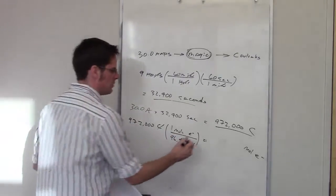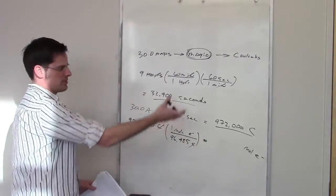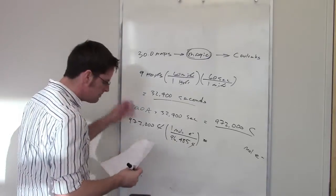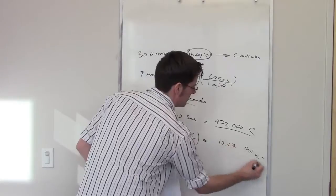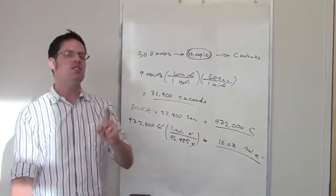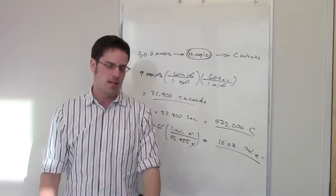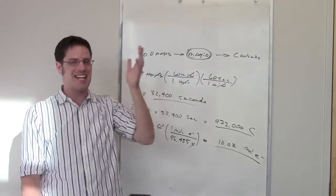I throw that into my calculator, that will tell me how many moles of electrons I'm actually getting in this number of Coulombs, and that comes out to be 10.07 moles of electrons. So we've now done step two of this process. Now we'll go back to the PowerPoint slide and see what the next step is.